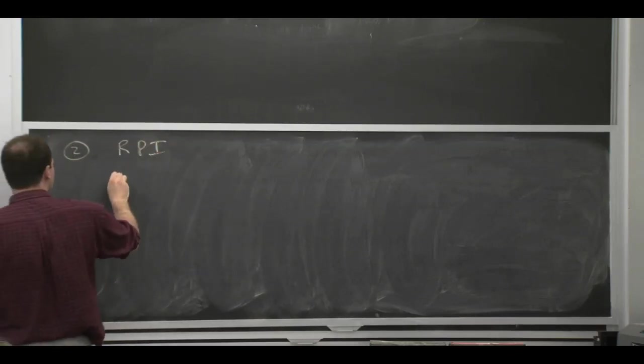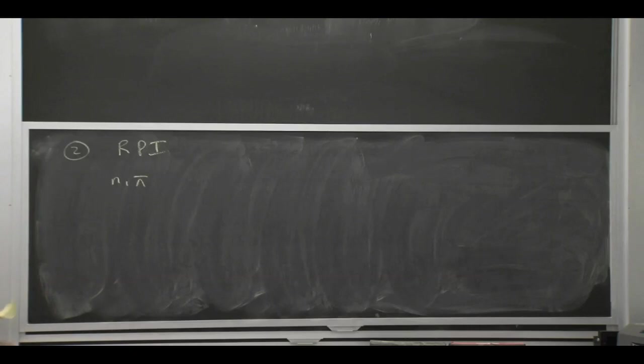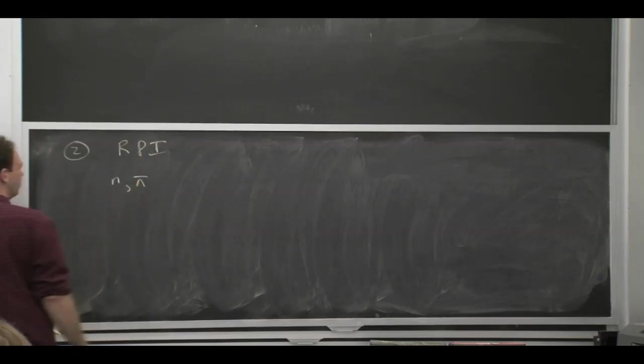So what's RPI? Well, when we formulated this theory, we needed a direction for the collinear line or for the collinear particles, n. And then we needed an auxiliary vector, n bar. And we formulated the whole setup in terms of this n and n bar.